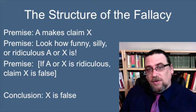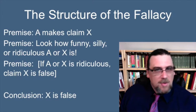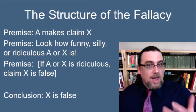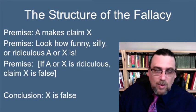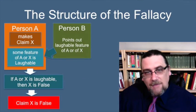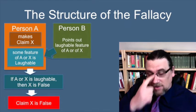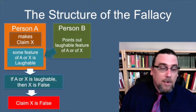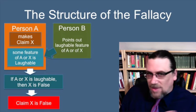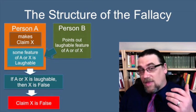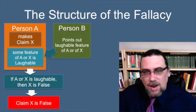How do you get from those two explicit premises to that conclusion? You need a bridge premise — an implicit premise, something being assumed — which is that if A or X is ridiculous, that somehow makes claim X false. When you put it that way, you can see this is actually quite poor reasoning. In graphic terms, we have two people: person A making a claim X, and person B engaging in the fallacy. Instead of attending to the claim, person B points out some feature of A or X that is laughable. The hidden premise is: if A or X is laughable, then X is false. And we get the unwarranted conclusion that X is false.